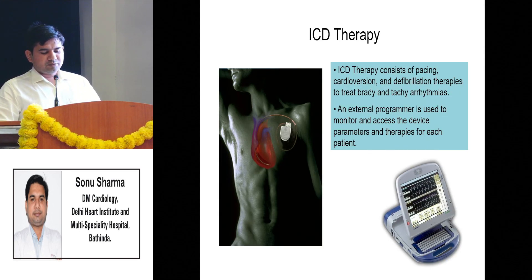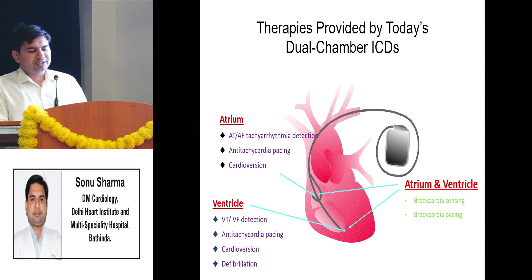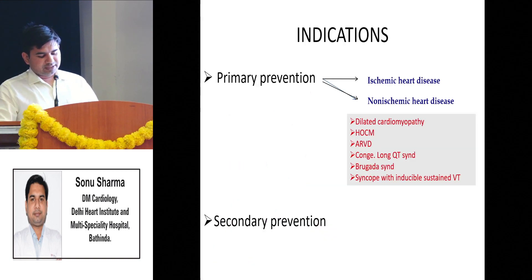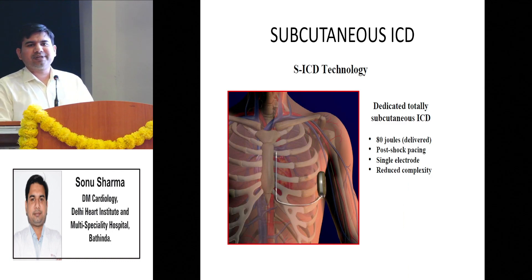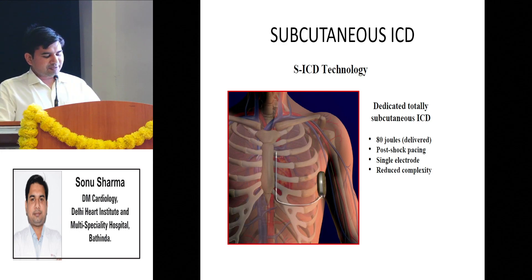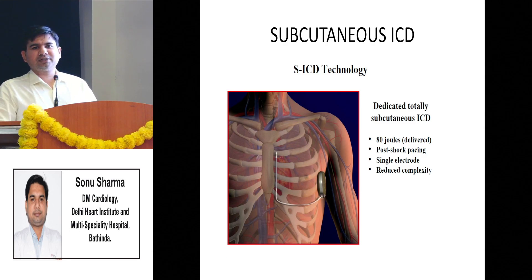Moving to ICDs: earlier we placed a generator below the clavicle with leads inside the RA and RV. Now we are moving towards a subcutaneous ICD, where the ICD and leads are placed subcutaneously just parallel to the sternum bone. There is no need to go transvenously, resulting in lesser chance of transvenous damage or infection compared to the transvenous approach.